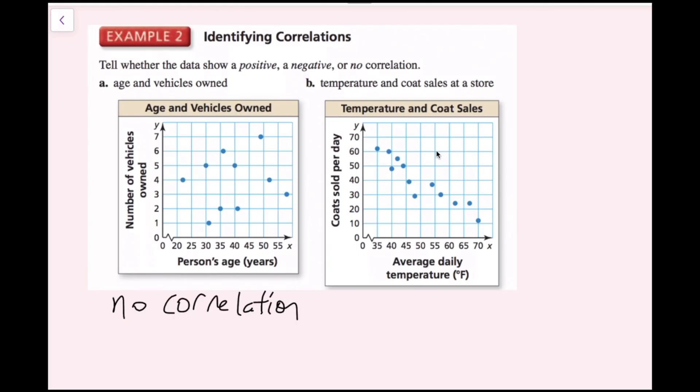For Part B, we can see that the data is definitely more obviously trending in a negative correlation here, because as I increase my temperature, the number of coats sold per day is really decreasing. This is pretty obviously a negative correlation.